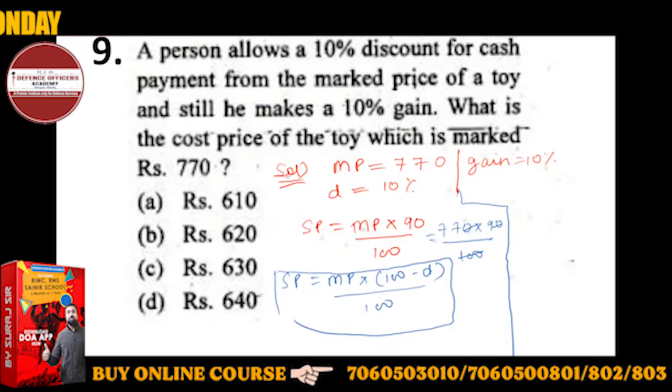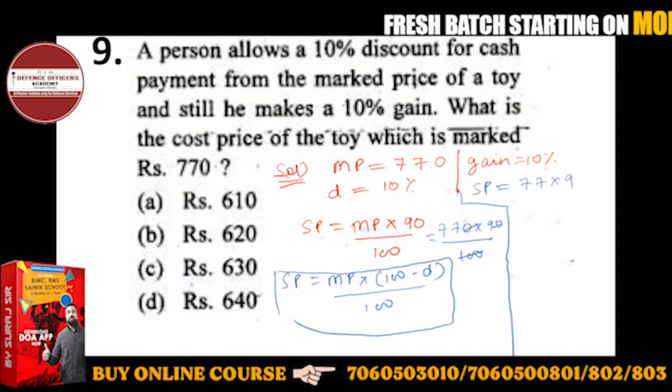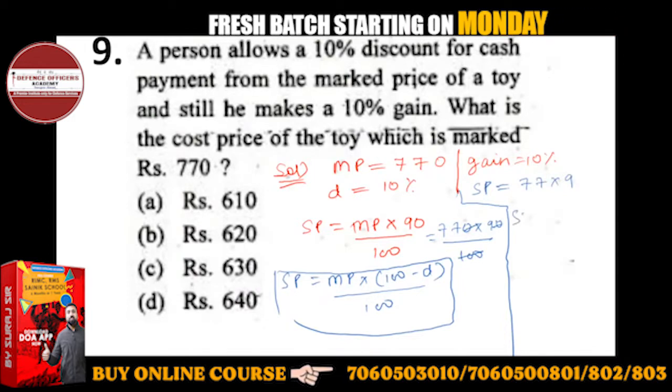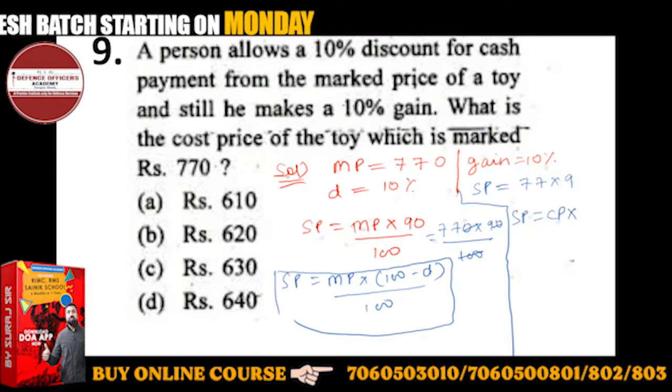Okay, here we will directly see gain is 10%. SP is a function of CP. With gain 10%, then direct 110 upon 100.